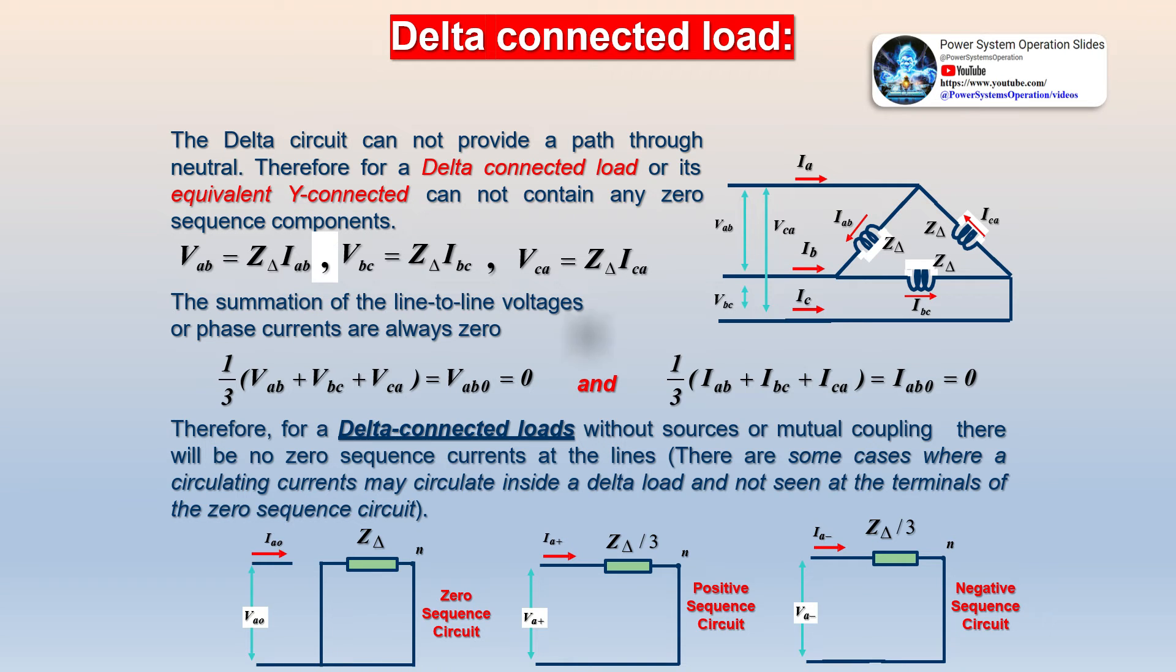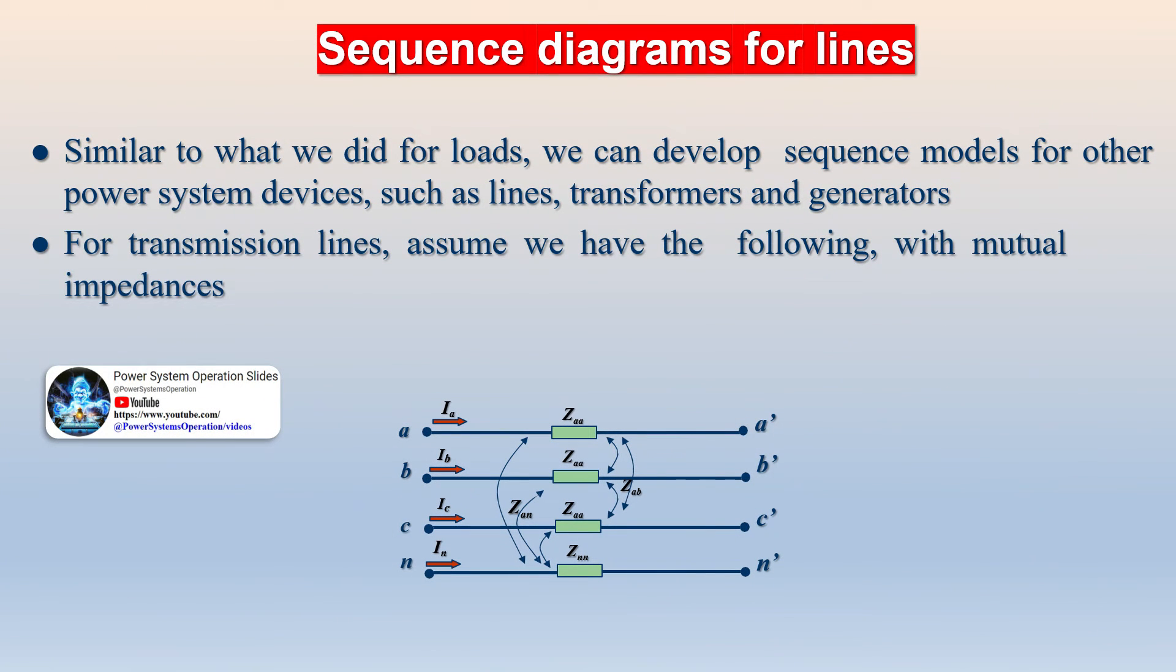In positive phase sequence component, the set of three phasors are equal in magnitude, spaced 120 degrees apart from each other, and having the same phase sequence as the original unbalanced phasors. The positive sequence component of the unbalanced three-phase system is shown below.